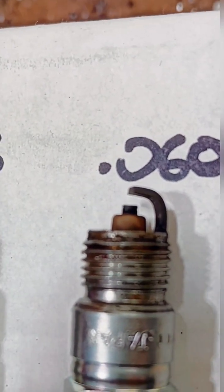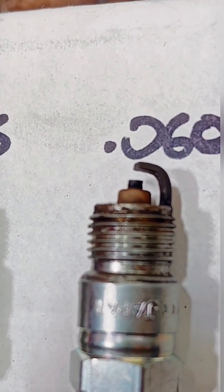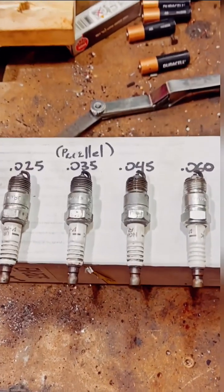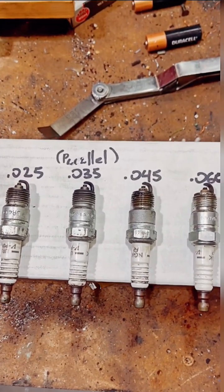And as you can see, that side electrode is bent way far away from that center electrode. That's the four most common spark plug gaps that you're going to find with gasoline.